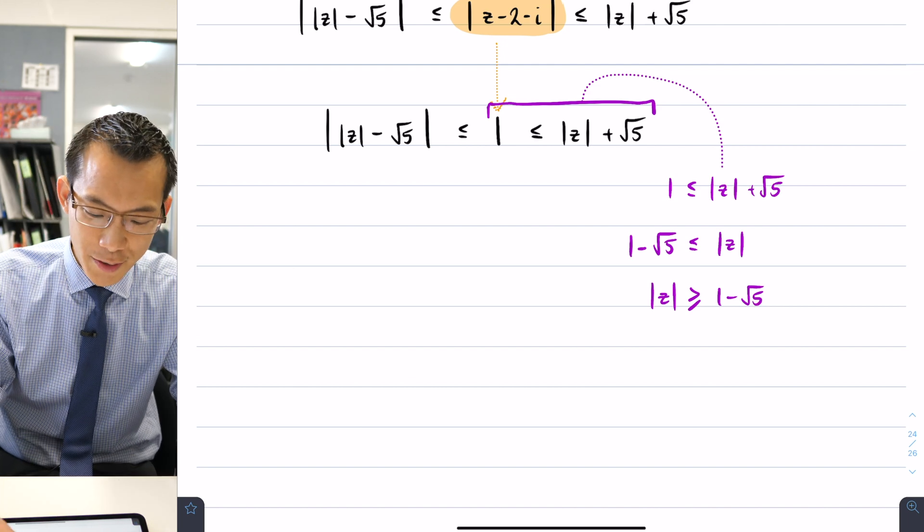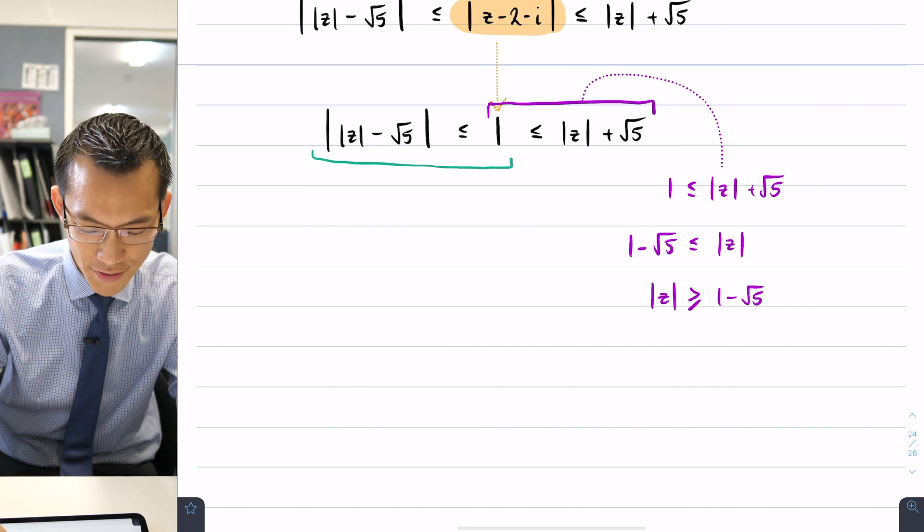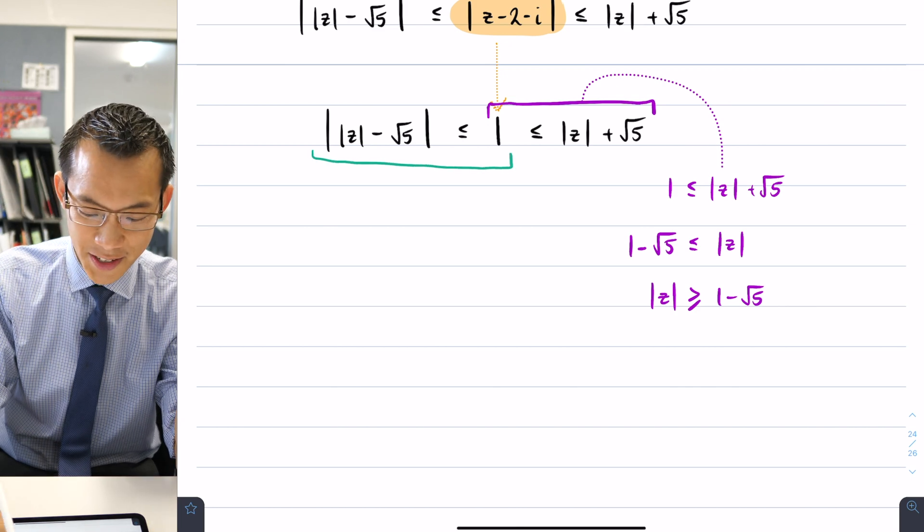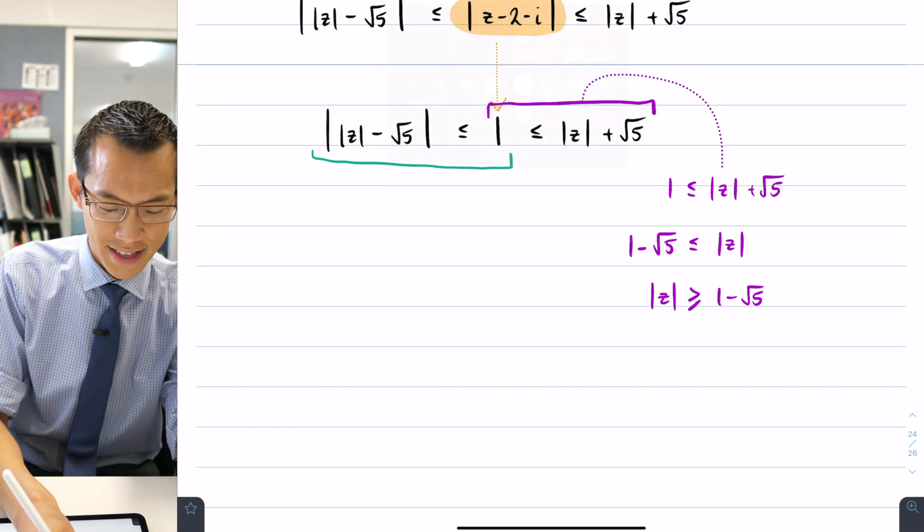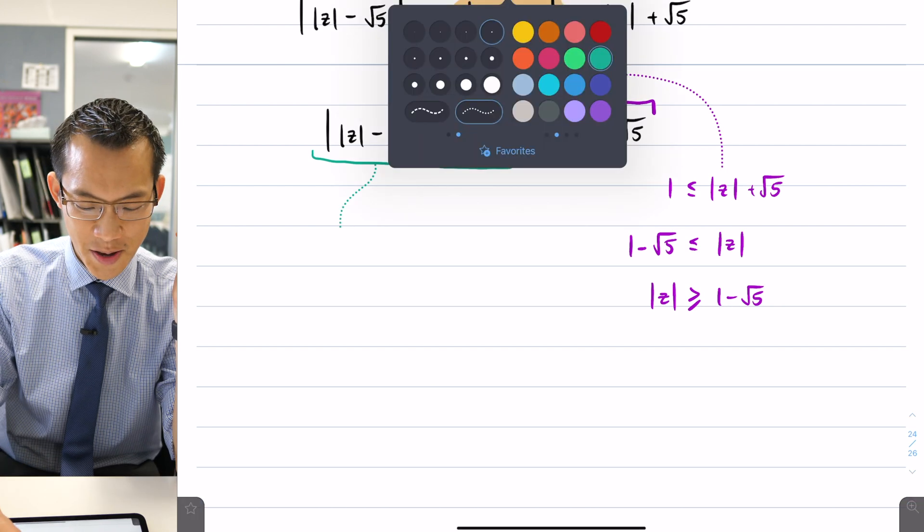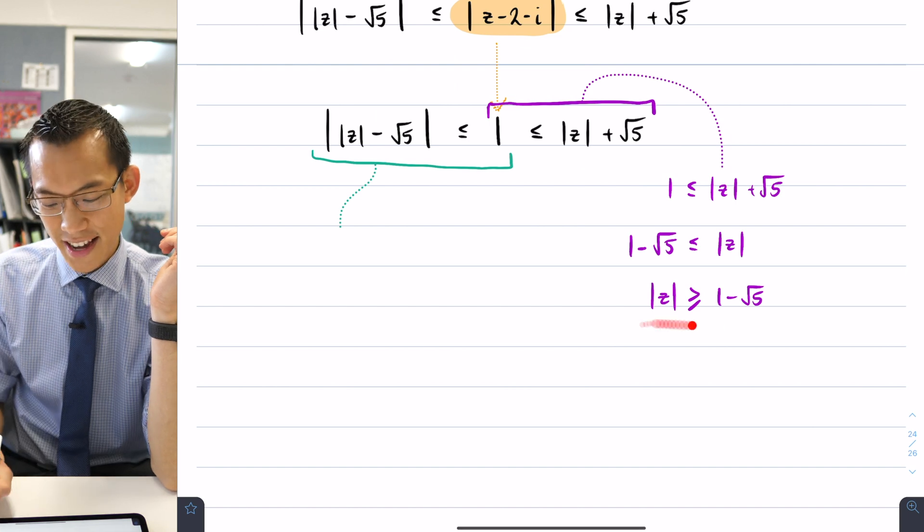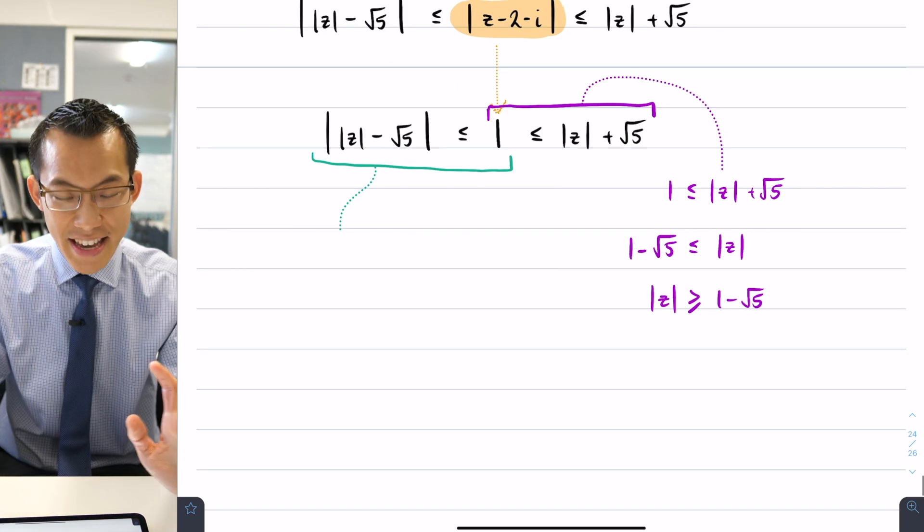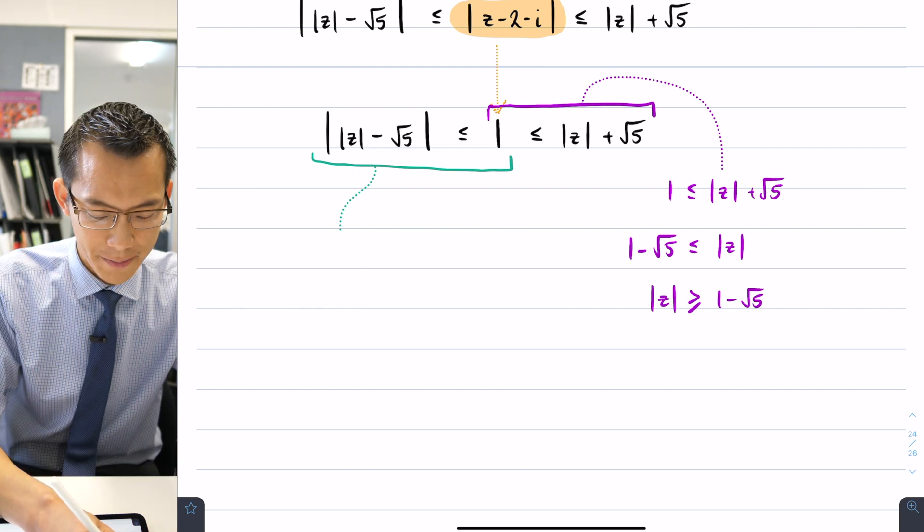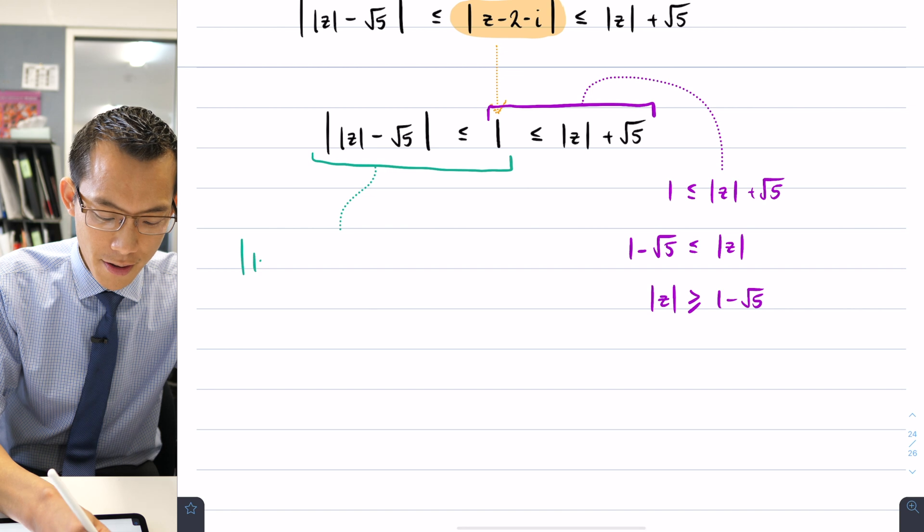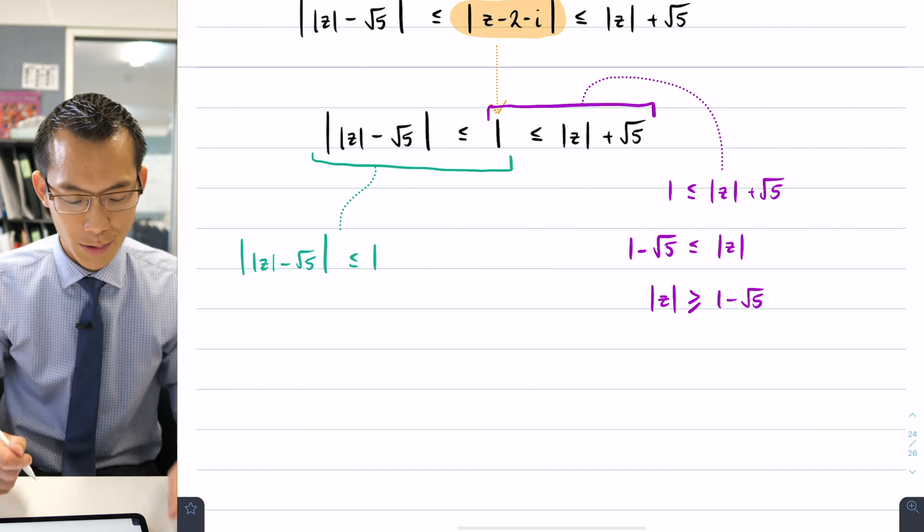So instead, I kind of have to grit my teeth and look over at this other part of the triangle inequality. Now I was resisting doing it because it looks like a garbled mess and I'm like, oh my gosh, there's like absolute values inside absolute values. I was trying my best to avoid it, but you can't because as you can see, looking at the other side is not useful. So in the same way, let's just write this part of the triangle inequality by itself and then see if we interpret it. So it's the absolute value of modulus of z take away root 5, absolute value, less than or equal to 1.